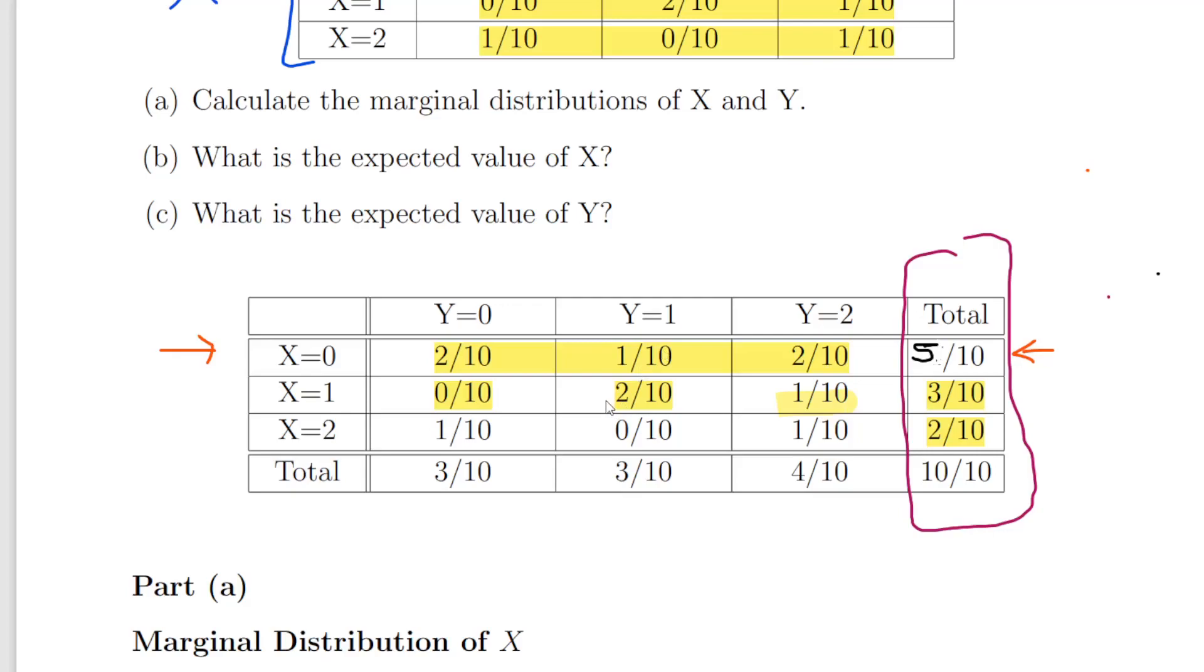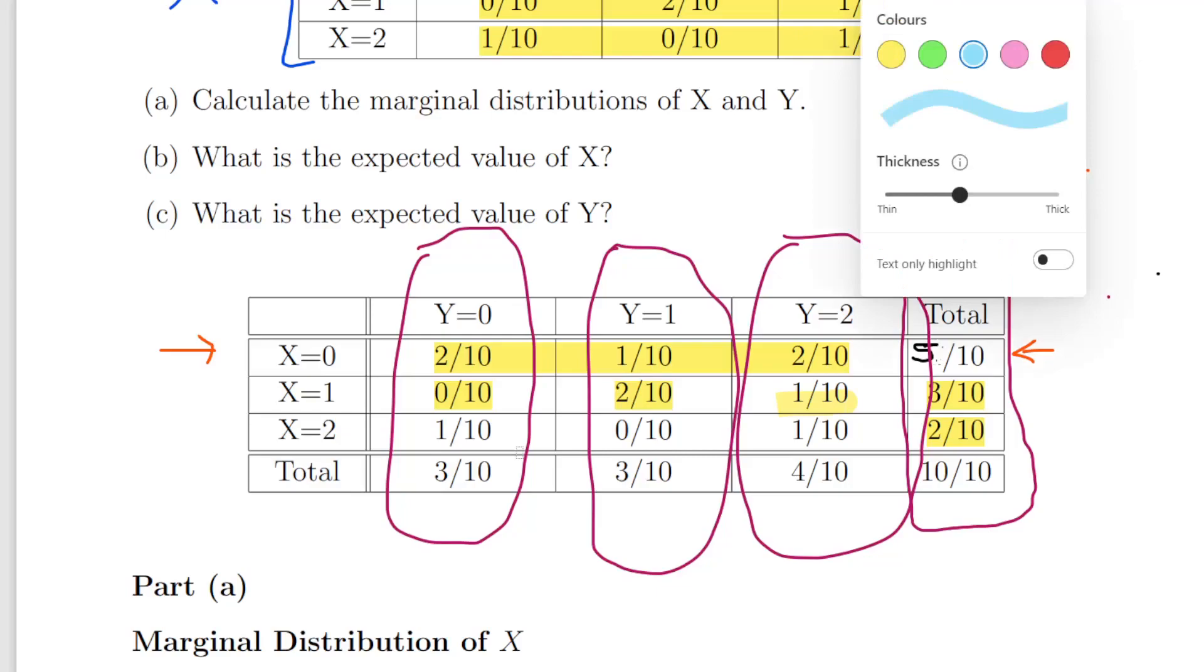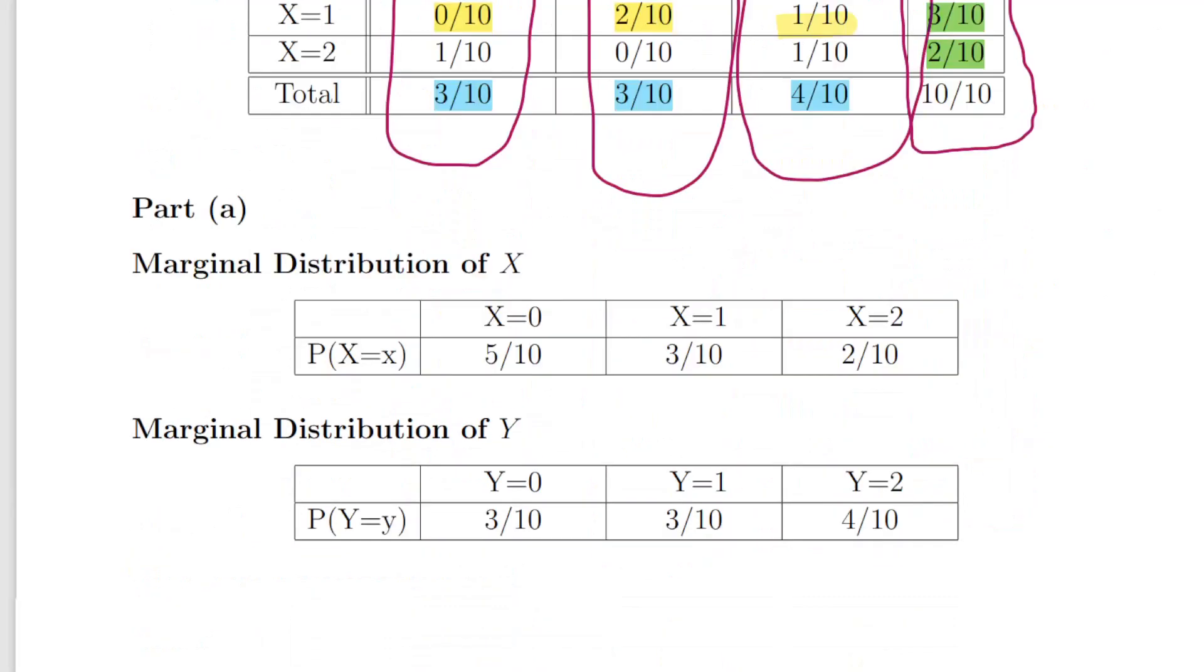Now we're going to look at the column totals there. Y equals 0, Y equals 1, and Y equals 2. What we do there is just tot up the totals there for each of the three columns. 3 over 10, 3 over 10, and 4 over 10. You could just do it very quickly there now. So we're going to use these values here to formally state the marginal distribution of X and Y.